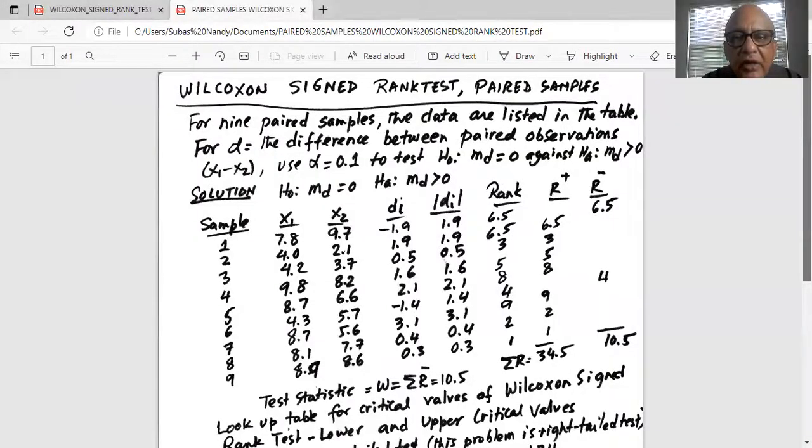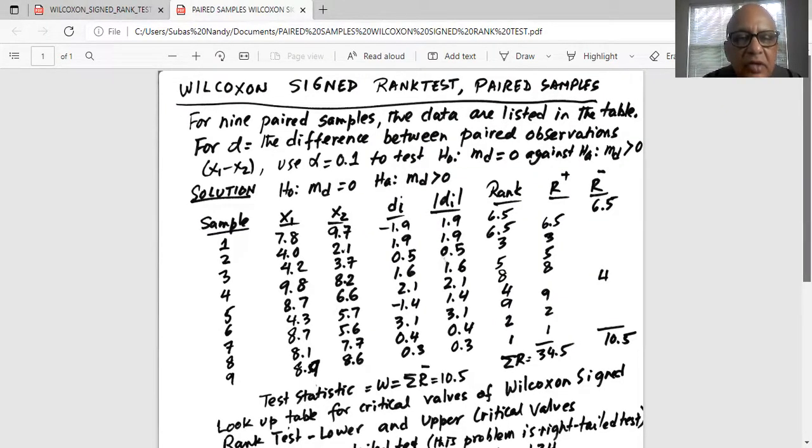So Wilcoxon signed rank test paired samples. For nine paired samples, the data are listed in the table. For d is equal to the difference between paired observations x1 minus x2, use alpha equal to 0.1 to test the null hypothesis median difference is equal to 0 against alternate median difference greater than zero. So it's a right tail test.